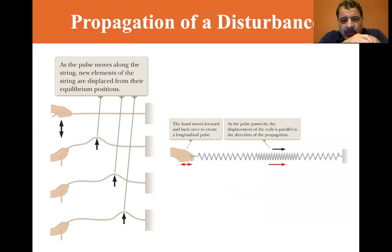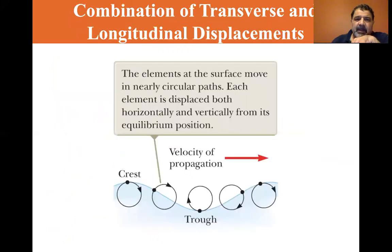Now we're going to look at the longitudinal wave. The hand moves forward and back to create a longitudinal pulse. As the pulse passes by, the displacement of the coils is parallel to the direction of the propagation. So now we know that in a transverse wave, the displacement is perpendicular to the wave motion. And in the longitudinal wave, the displacement is parallel, is in the same direction as the propagation.